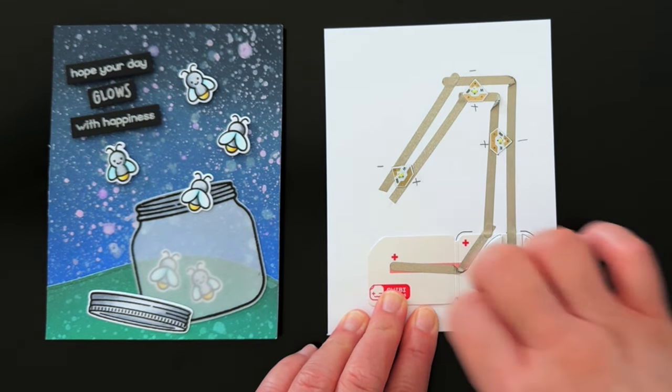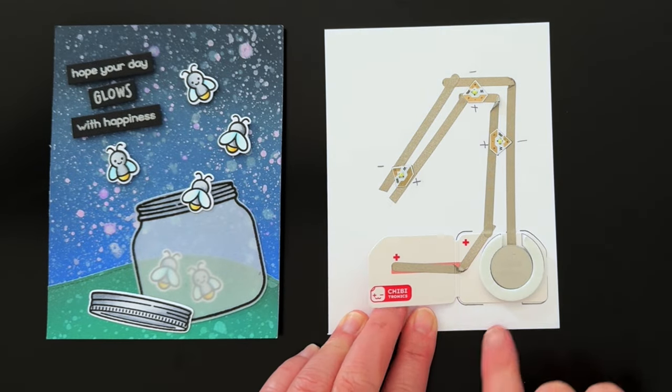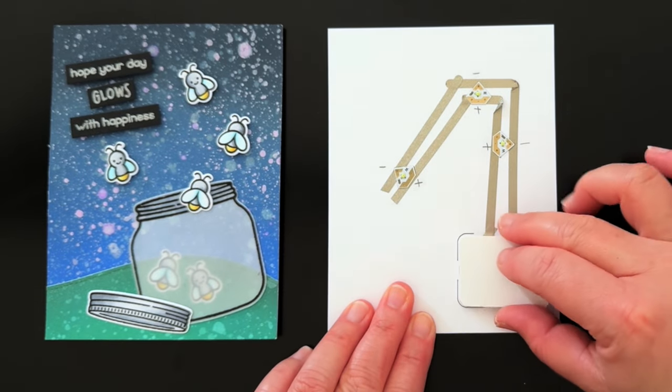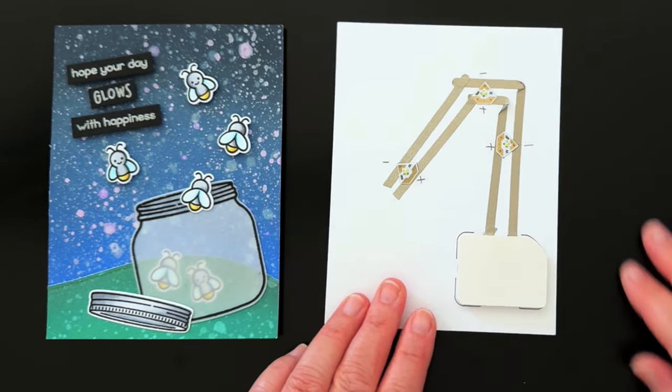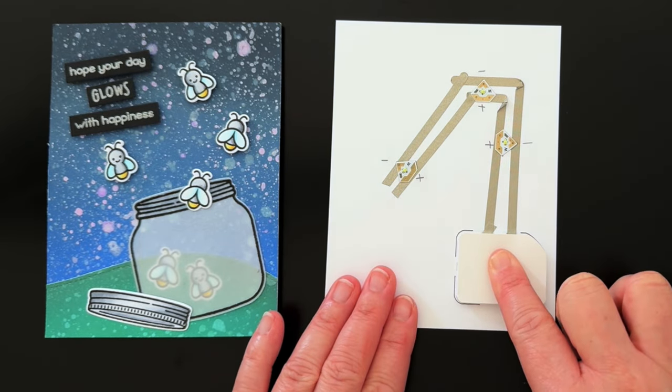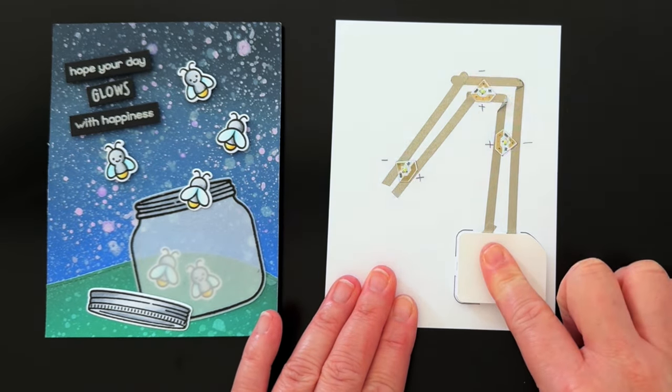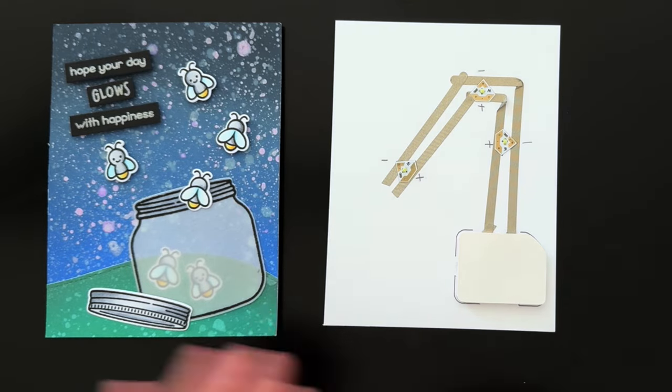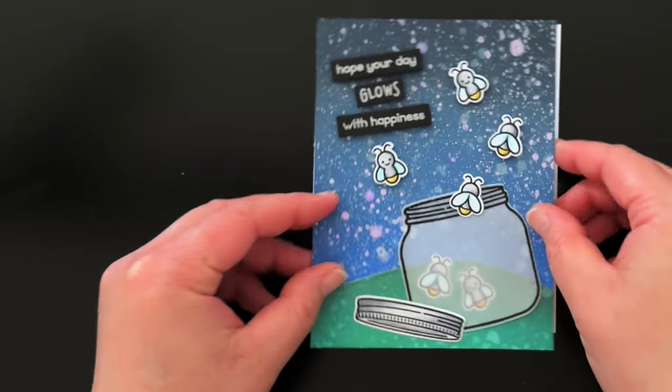But you can also remove the adhesive backing from the top of the foam ring and seal the battery holder closed. As you can see, the LED stickers do not light up and the battery is not being drained unless you apply pressure and press down on the holder. Our foam rings are perfectly sized to fit the CR2016 batteries included in the sets.